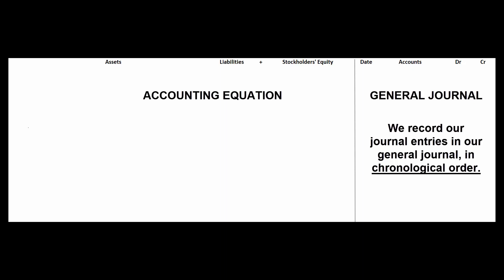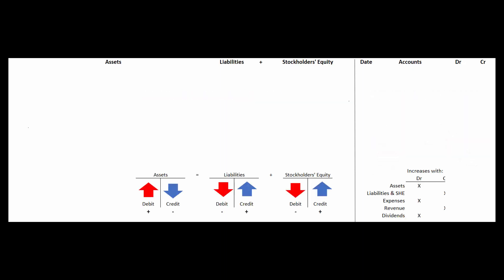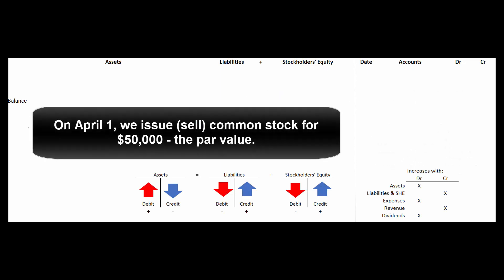Let's do three quick journal entries and watch what happens to the accounting equation. In the first transaction on April 1st, the company sells common stock for $50,000. What's happening to cash on the company's balance sheet? It's going up — they've got $50,000 in. Assets increase with debits, so we debit cash for $50,000.